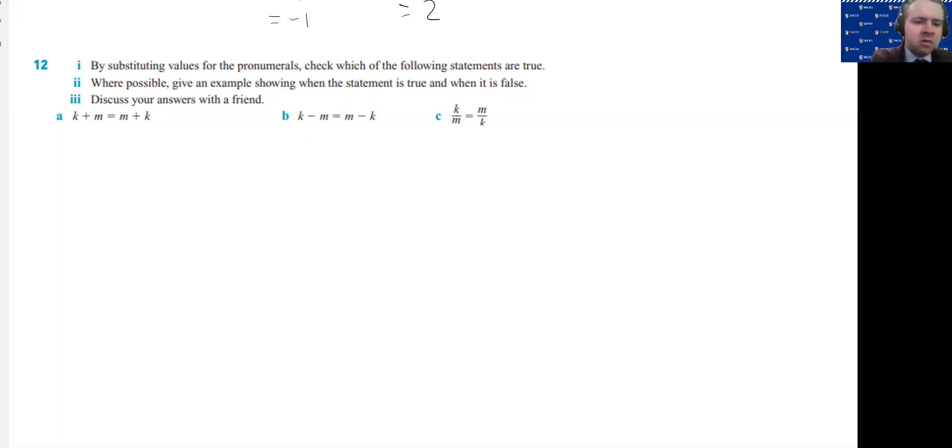So let's say k equals 1 and m equals 2, then we can substitute and check whether it's true. So the left hand side, I'm going to write LHS which means left hand side, is going to be 1 plus 2 which equals 3, and then the right hand side, m plus k is going to be 2 plus 1 which also equals 3. So therefore we can use our therefore statement. The equation is true.